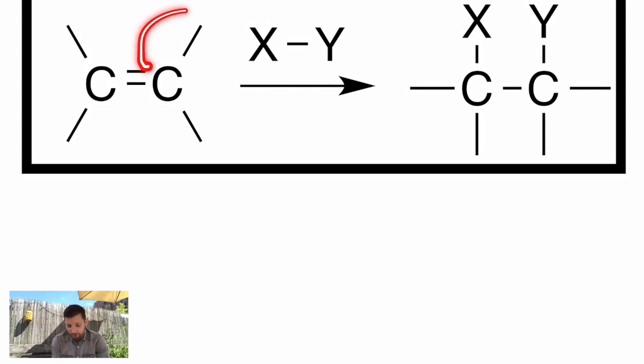Whatever X is attaches to one of the carbons and Y to the other. There's a lot of consequences of that addition worth going into, things like stereochemical outcomes. So we'll teach ourselves a couple of new reactions in this lesson and learn those consequences.